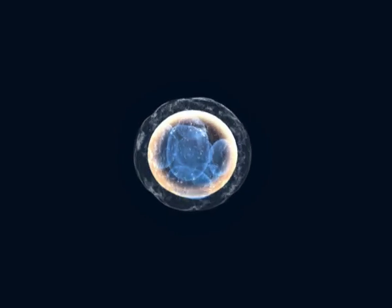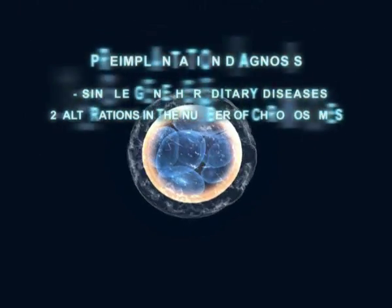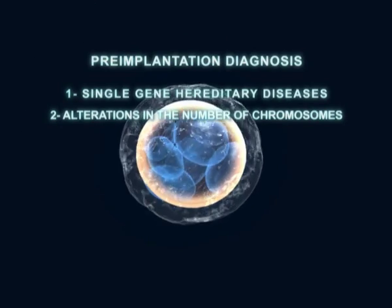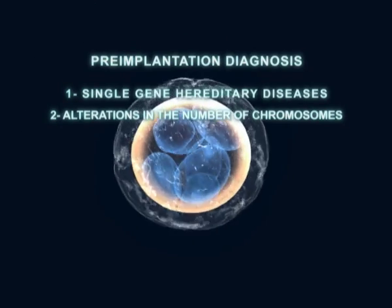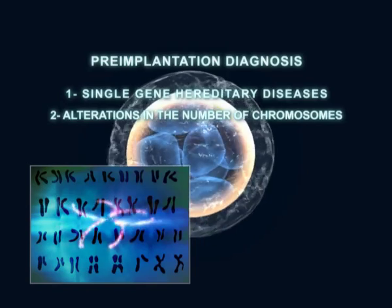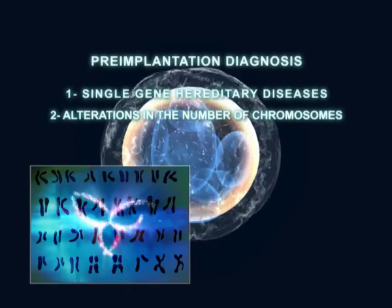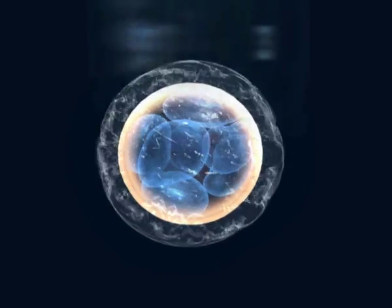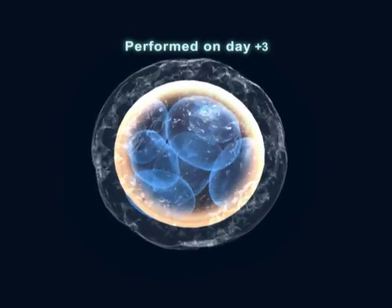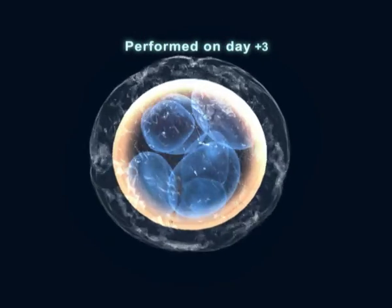Genetic pre-implantation diagnosis allows the detection of embryos that are affected by inherited single gene diseases, such as those that are due to changes in the number of chromosomes. This is performed in embryos grown in vitro on day 3 of development.